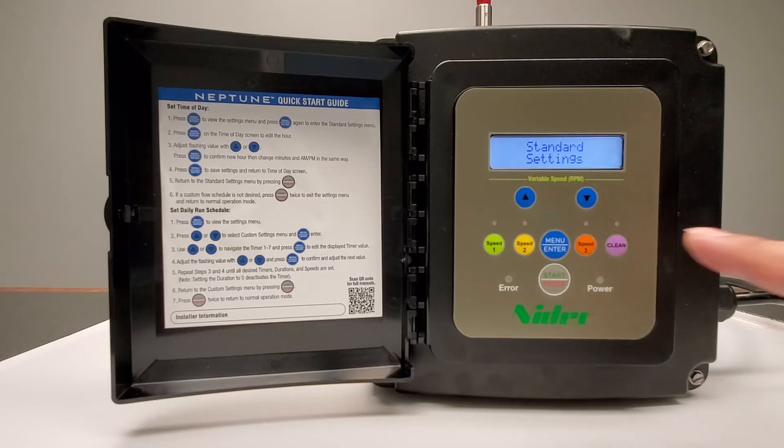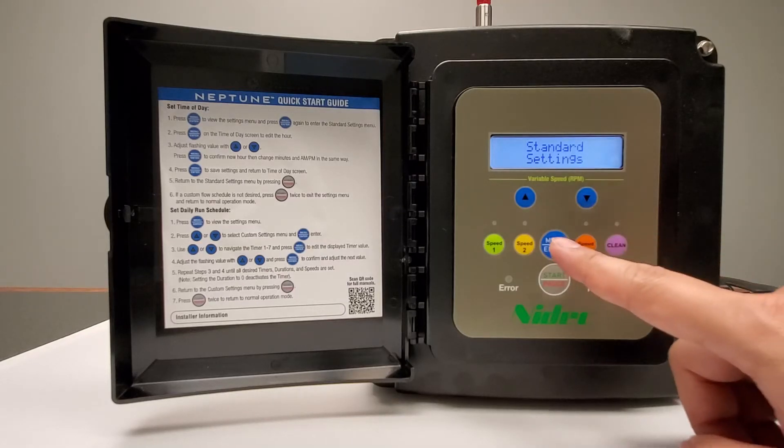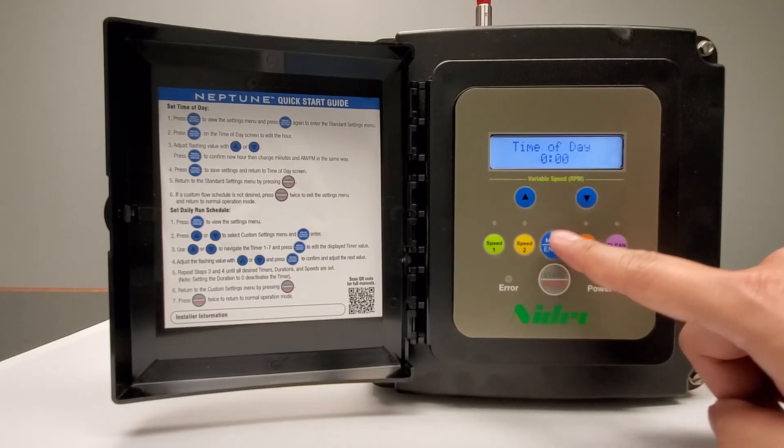To set up the time and enter the standard setting menu, press the menu/enter button. This will take you into the options and allow you to set the time on the Neptune motor.